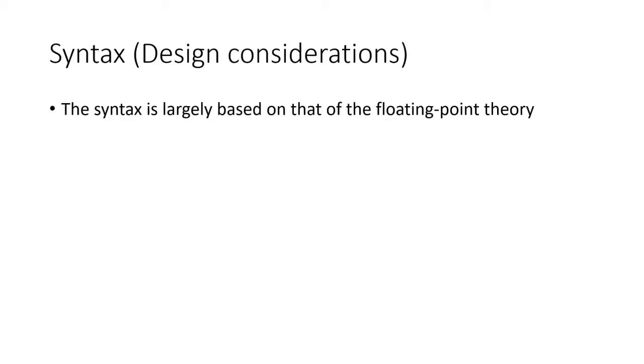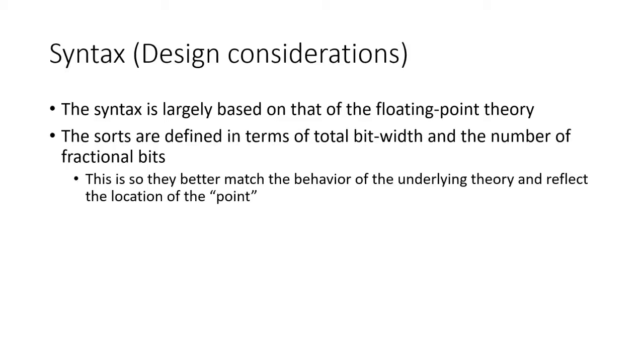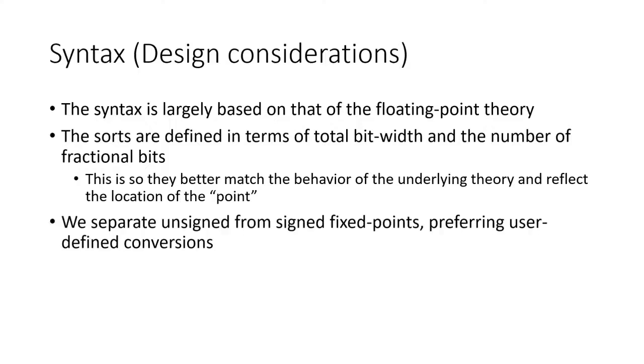Due to the similarity between fixed point arithmetic and floating point arithmetic, we felt it was most natural to base our syntax on that of the floating point theory. We define a fixed point sort in terms of its total bit width and the length of its fractional portion. This better matches fixed point programs, which for example use 32-bit integers as the underlying type, and use 16 bits for the fractional portion. Unsigned and signed sorts are separated because even when they have compatible bit patterns, an operation between unsigned and signed sorts does not have a good interpretation. We instead allow users to define such operations themselves.